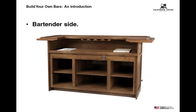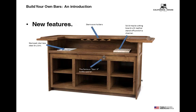The real changes with the Build Your Own Bar program happen on the bartender side. All NAPA, Rutherford, and Marin straight and return bars start with a blank canvas of adjustable shelves. All but one of these cabinets can be customized with your choice of features, such as a locking door or wine rack. All NAPA, Rutherford, and Marin bars now come with standard features including the stainless steel dry sink, the famous Star X bottle opener, a solid maple cutting board with drip channel and leather standoffs, and stemware holders beneath the bar top. The internal construction of the NAPA bars is completely changed from a frameless edge-banded construction to a hardwood face frame construction to match the Rutherford and Marin collections.